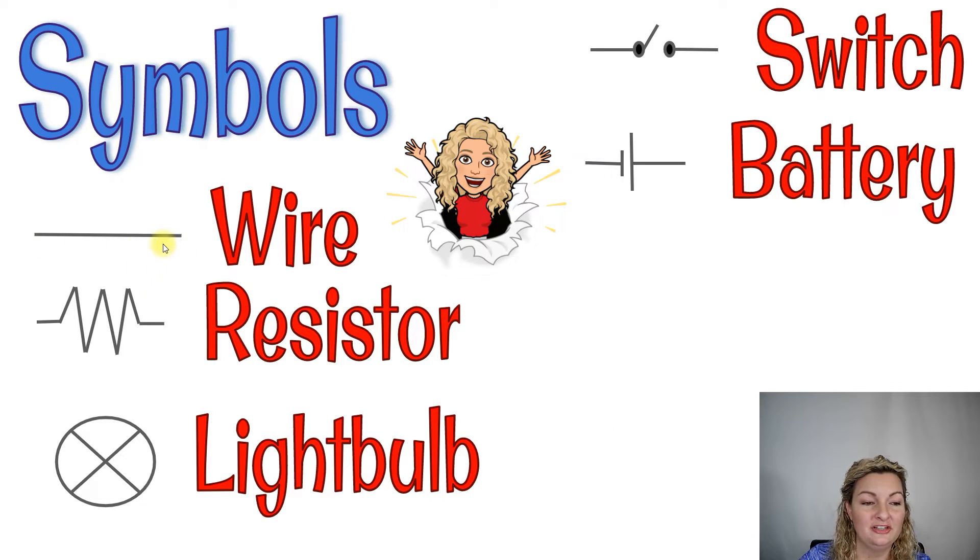So a wire is a straight line. A resistor is going to be a zigzag line. Now you can see this part connecting on each side of the zigzag line, and that's just really where it's going to connect back to your wire. A light bulb is going to be a circle with an X. That's the very easiest one for you to draw.